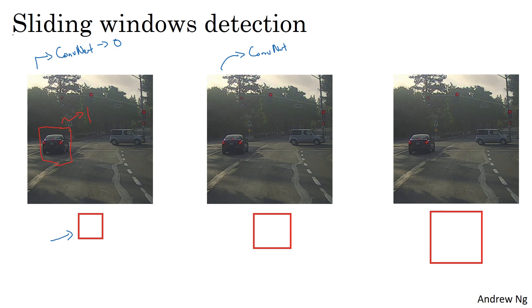This algorithm is called sliding windows detection because you take these windows, these square boxes, and slide them across the entire image and classify every square region, with some stride, as containing a car or not.